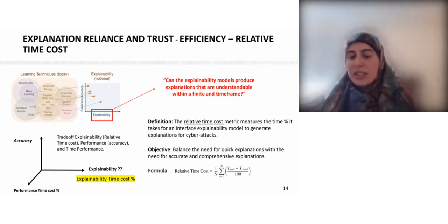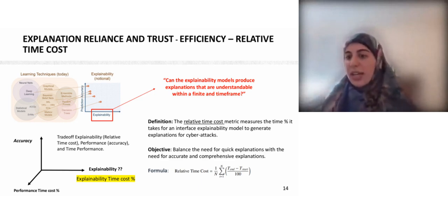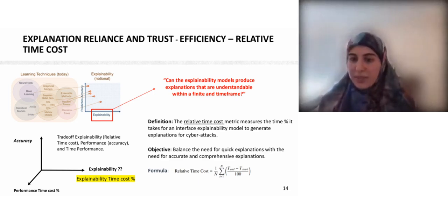The second property is efficiency, where we plot the relative time cost to show a trade-off between accuracy, explainability, and performance time. We defined the relative time cost as the measurement of the time it takes to generate an explanation for a cyber attack. The main objective is balancing the need for quick explanation against the need for accurate and comprehensive explanation.